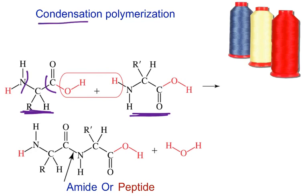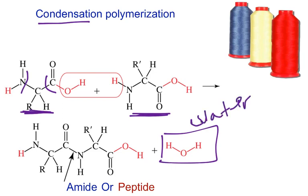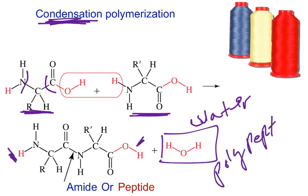In condensation polymerization, monomers come together just as before, but you also get the production of water. That's the only basic difference between addition and condensation polymerization — you form water with condensation polymerization. Notice on this end, the amino group could react with an acid group, and the OH from the acid could react with another amine group, allowing it to continue and create a polypeptide. This bond right here is called the amide bond, also known as a peptide bond.